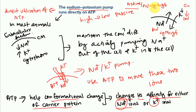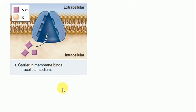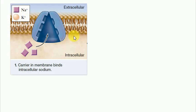This movement is achieved only by the constant expenditure of metabolic energy — it requires metabolic energy in the form of ATP. This energy drives changes in affinity for sodium and potassium ions. The sodium potassium pump works through a series of conformational changes in the transmembrane protein.